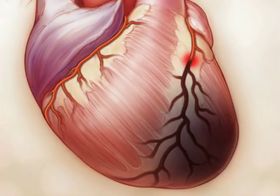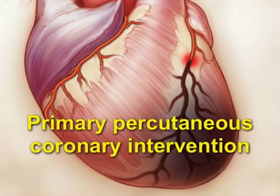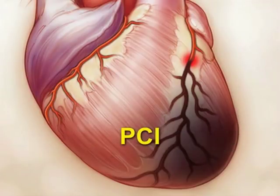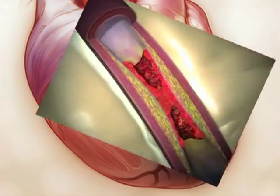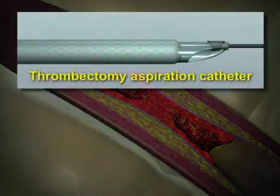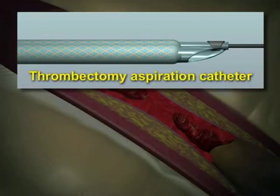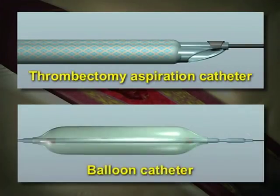Early reperfusion by means of primary percutaneous coronary intervention, or PCI, has reduced mortality from acute myocardial infarction to less than 5%. A new PCI technique uses a thrombectomy aspiration catheter, in contrast to the traditional technique which uses a balloon catheter to open the artery.